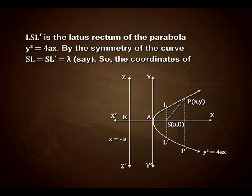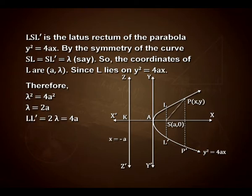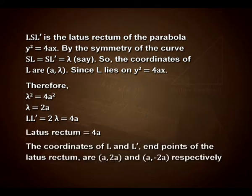Let SL = SL' = λ. So the coordinates of L are (a, λ). Since L lies on y² = 4ax, therefore λ² = 4a², so λ = 2a. The length of the latus rectum LL' = 2λ = 4a. The coordinates of L and L', the endpoints of the latus rectum, are (a, 2a) and (a, −2a) respectively.